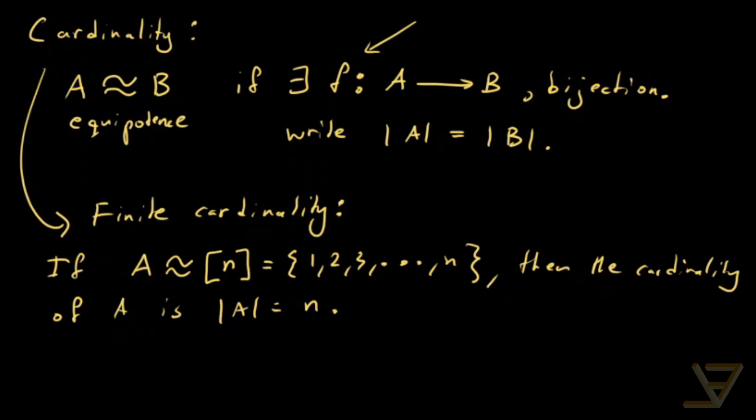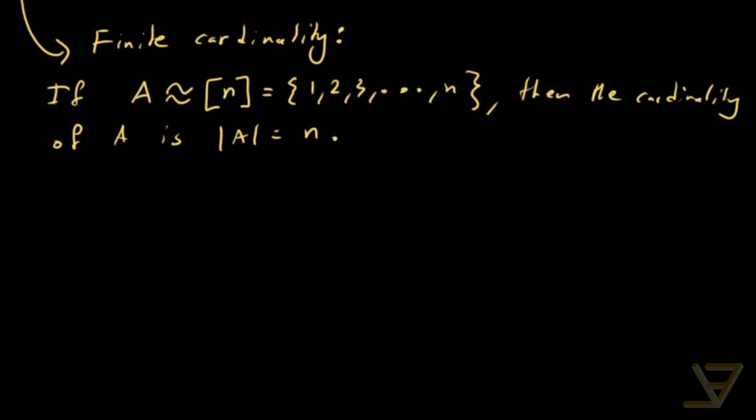Now, you might be wondering, can a set have two different cardinalities? So, it's equipotent with the section of N and the section of M, but that's not possible. So, I'm not going to prove that, but there is a theorem